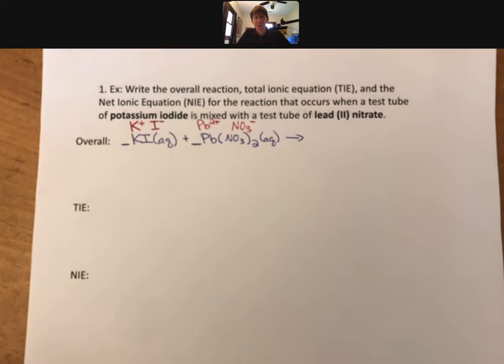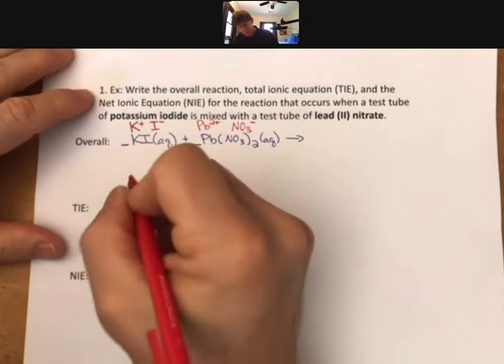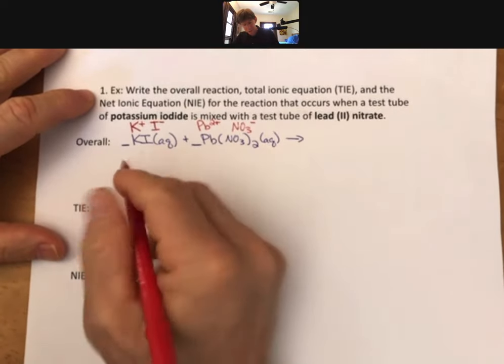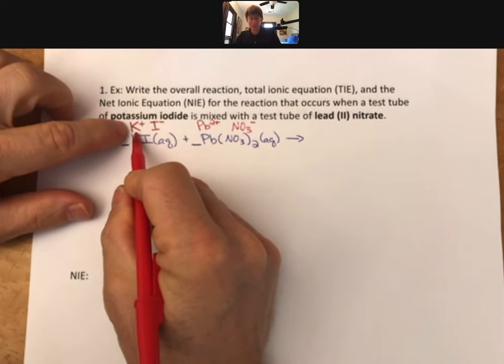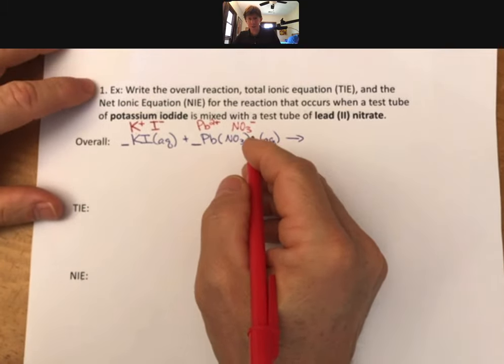And all that a double replacement reaction does is the positive of one goes with the negative of the other. So our two products are going to be the K+ here and the nitrate here.